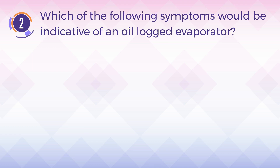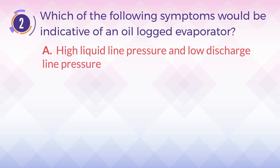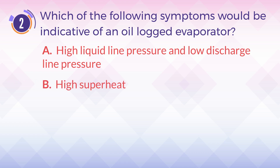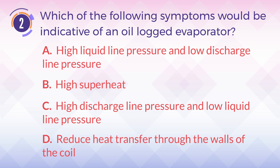Number 2. Which of the following symptoms would be indicative of an oil-logged evaporator? A. High liquid line pressure and low discharge line pressure. B. High superheat. C. High discharge line pressure and low liquid line pressure. D. Reduced heat transfer through the walls of the coil.